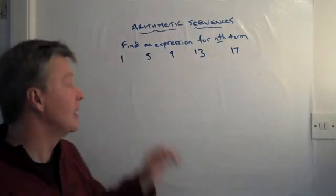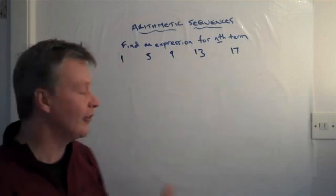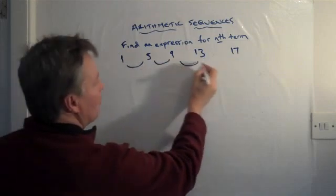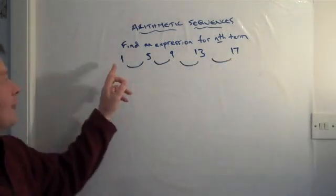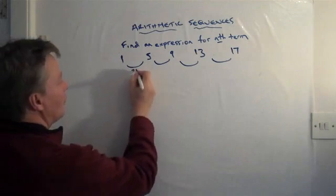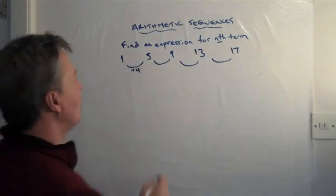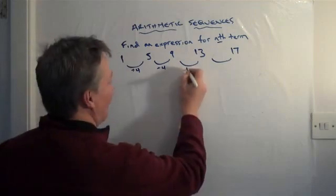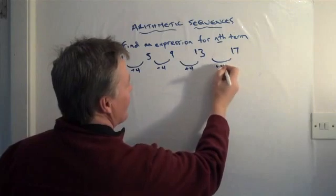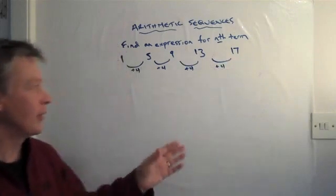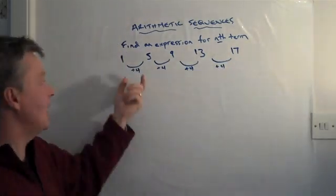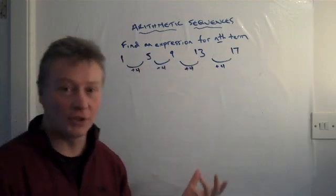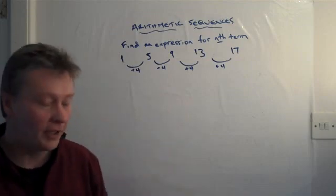You'll normally be given the first few numbers of the sequence, and the first thing to look at is the difference between each of the numbers. The difference between 1 and 5 is add 4. The difference between 5 and 9 is add 4. The difference between 9 and 13 is add 4. And 13 and 17 is add 4. At this sort of level, you're always going to get the same difference between each of the terms — it will always be the same.